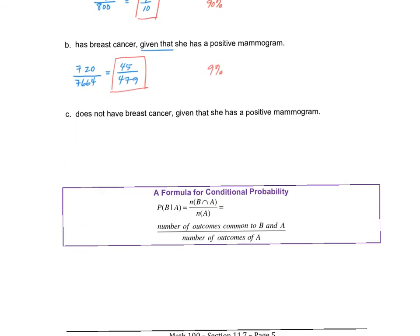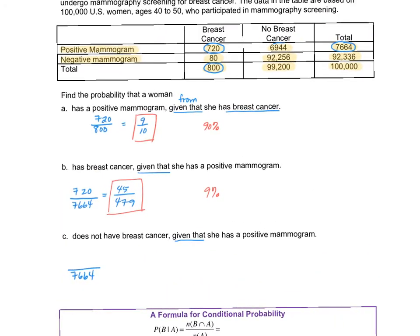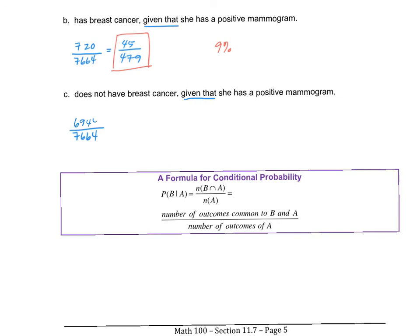Part B: find the probability that a woman has breast cancer given that she has a positive mammogram. From the 7,664 who tested positive, 720 actually had breast cancer — giving 720 over 7,664, which reduces to 45 over 479, or roughly 9%. Part C: find the probability that a woman does not have breast cancer given she has a positive mammogram. Of the 7,664 who tested positive, 6,944 did not have breast cancer — giving 6,944 over 7,664, which reduces to 434 over 479, or roughly 91%.